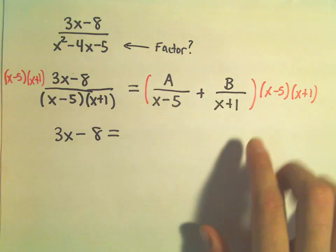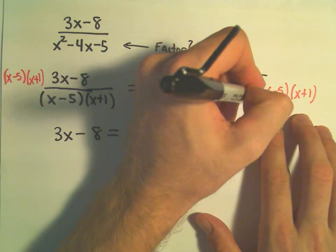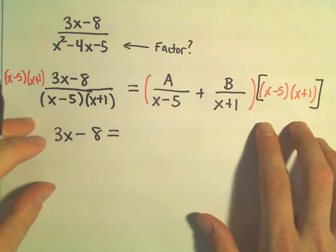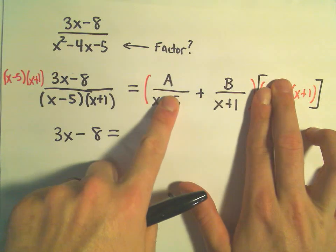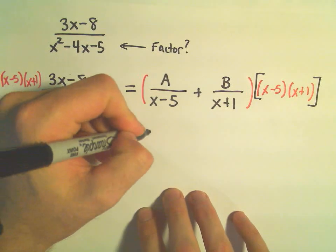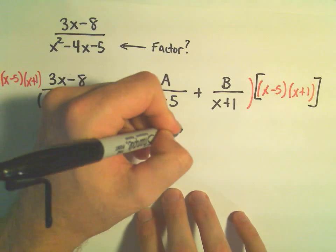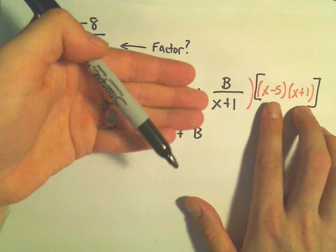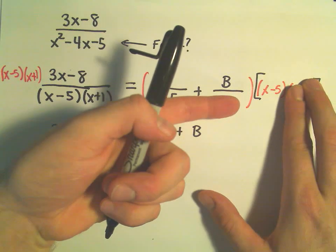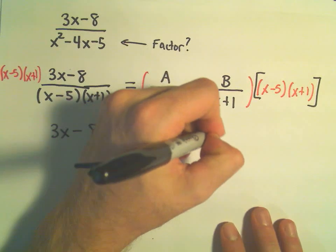And on the right side, if we were to distribute, because again, think about this as being sort of one big factor. If we distribute it to the first term, the x minus 5's would cancel. We would be left with A times x plus 1 plus B. When we distribute all that stuff to our second term, the x plus 1's would cancel and we would be left with the x minus 5.